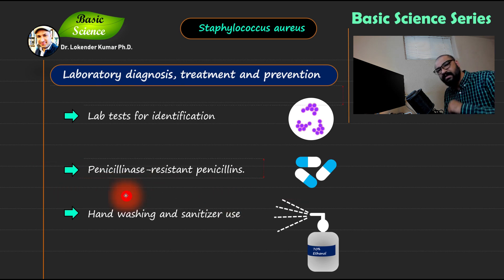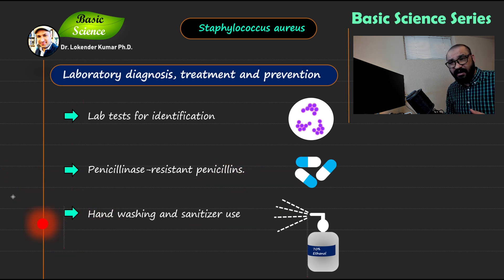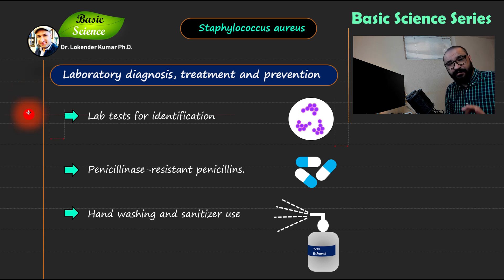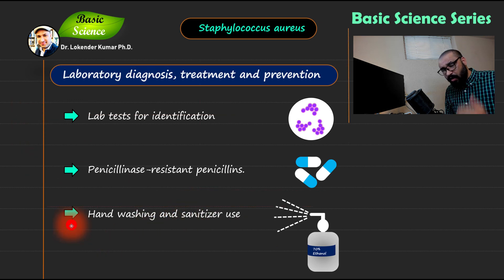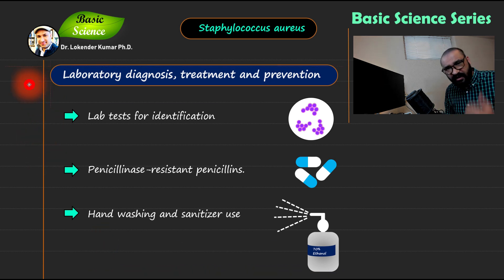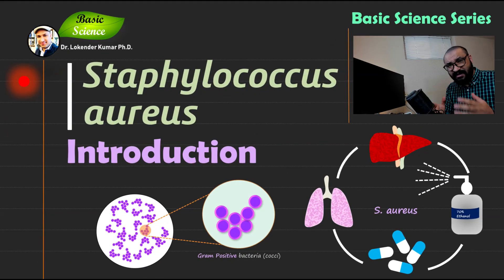For treatment, penicillinase-resistant penicillin is an important option for this organism. For prevention, hand washing and sanitizer use are critical. Follow good hygienic practices — regular use of sanitizer or ordinary soap, along with frequent and correct hand washing, will keep you safe from this organism.